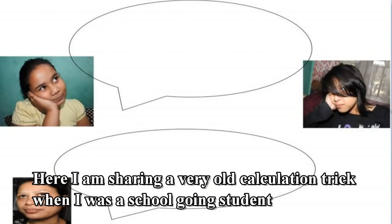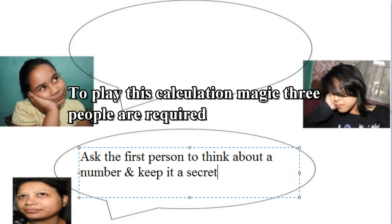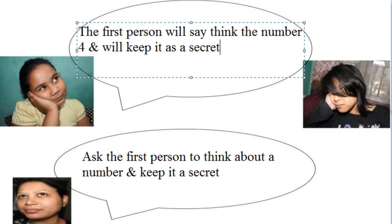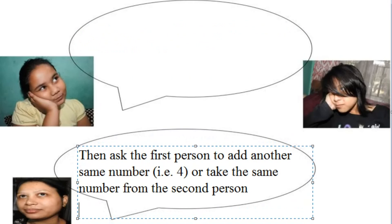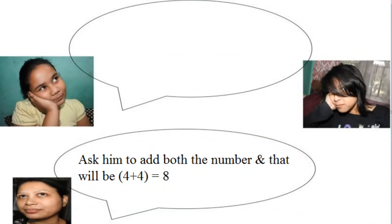I am sharing a very old calculation trick. When I was a school going student, to play this calculation magic, three people are required. Ask the first person to think about a number and keep it a secret. The first person will think of the number 4 and keep it as a secret. Then ask the first person to add another same number — that is 4. Or take the same number from the second person, ask him to add both numbers, and that will be 4 plus 4 equals 8.